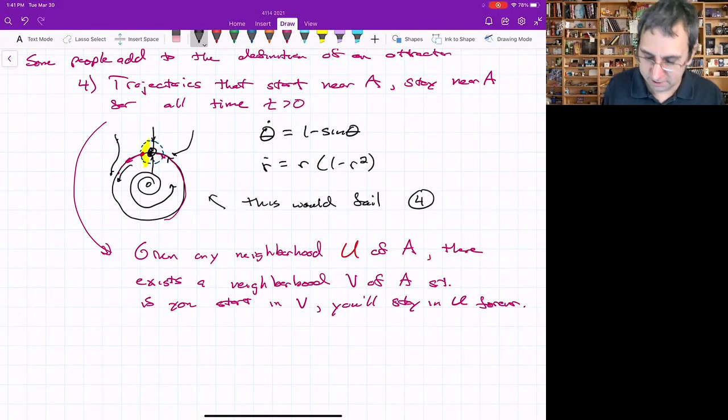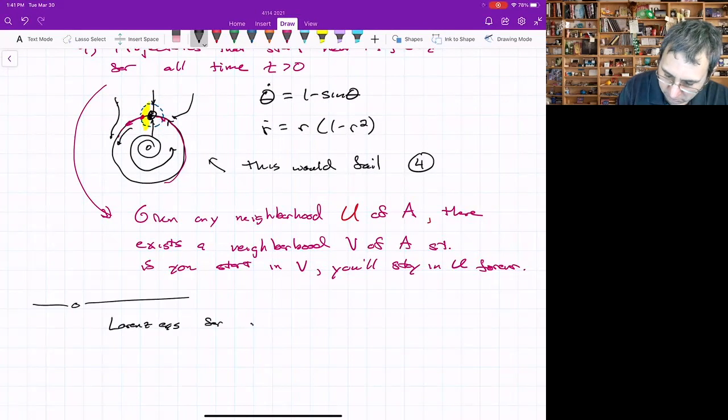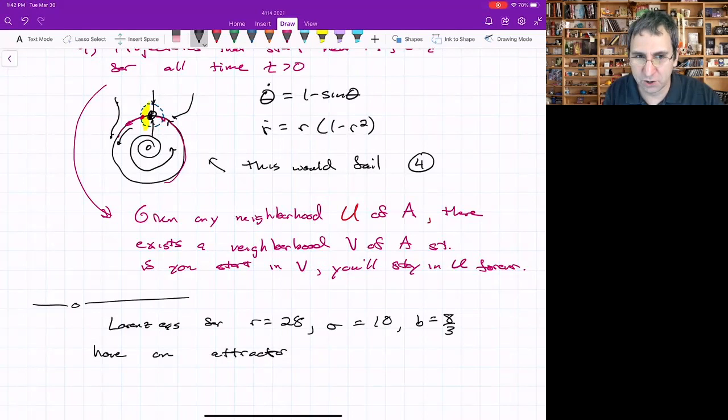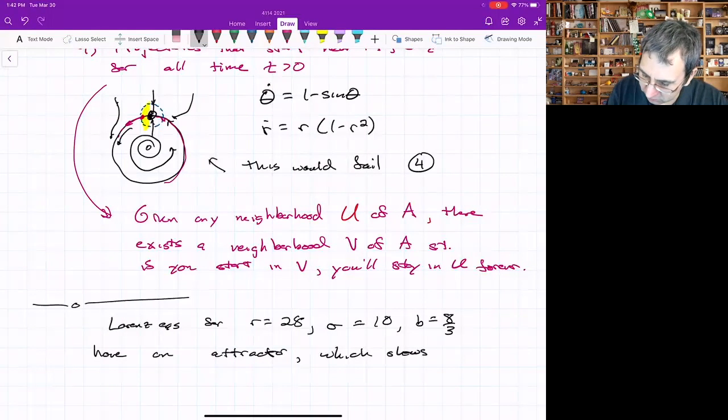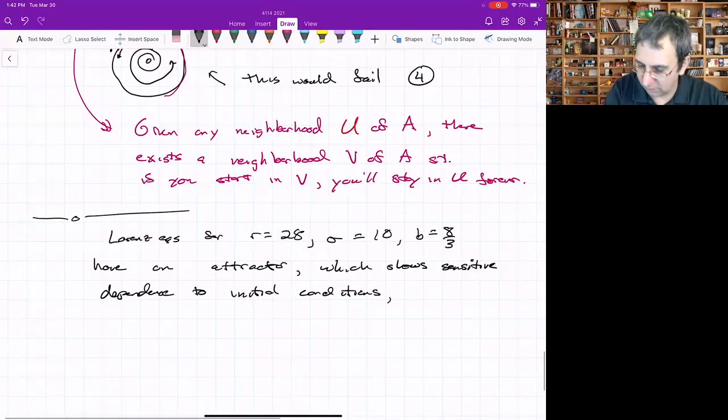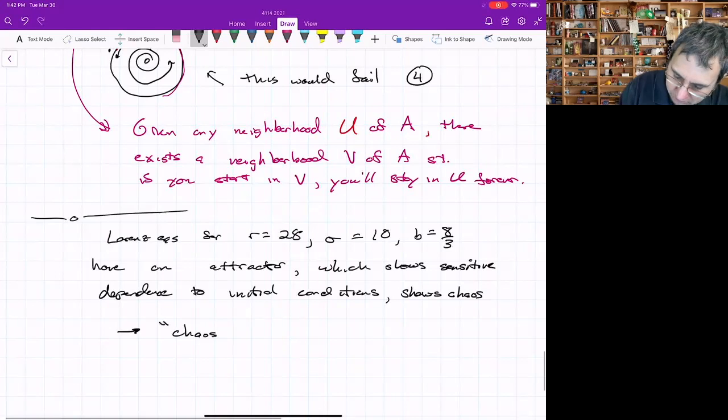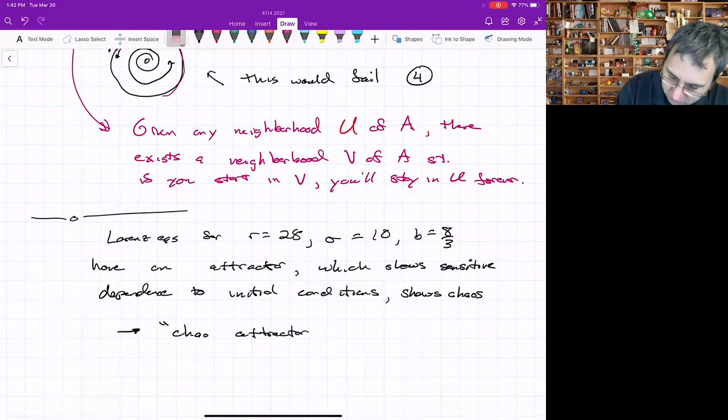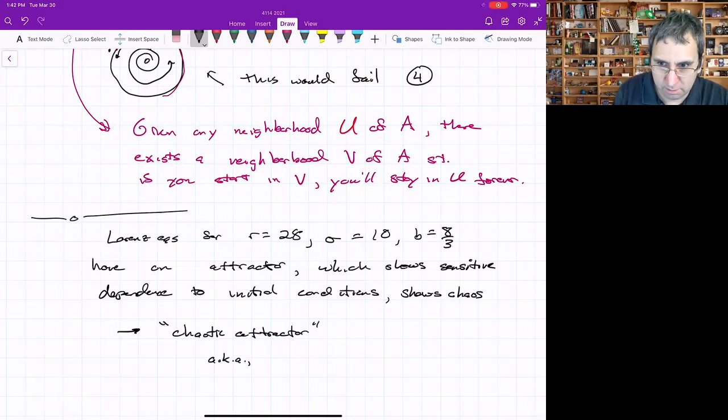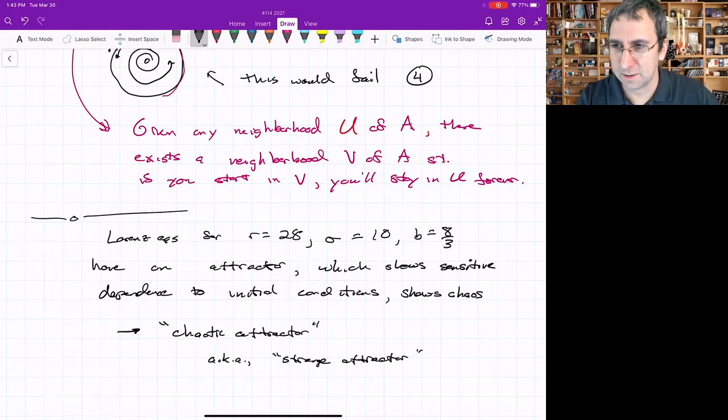This discussion of what's an attractor was just to say the Lorenz equations for r equals 28, sigma equals 10, b equals 8/3, have an attractor. The dynamics of the attractor itself show chaos, which by this means it shows sensitive dependence to initial conditions and aperiodic behavior. That's why you combine those two terms we've defined: you get a chaotic attractor, or the name that people gave it because it was strange—it wasn't like a limit cycle or other things—strange attractor. We will say more about the Lorenz attractor next time and some ways that Lorenz tried to understand it.